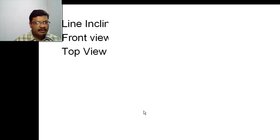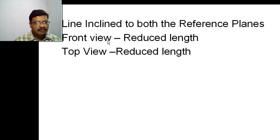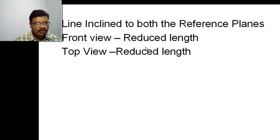The fourth case is when the line is inclined to both the reference planes. When the line is inclined to both reference planes, we will get reduced length in both the front view and top view.